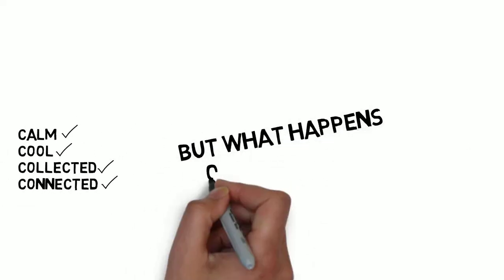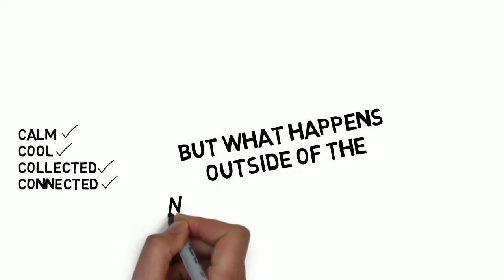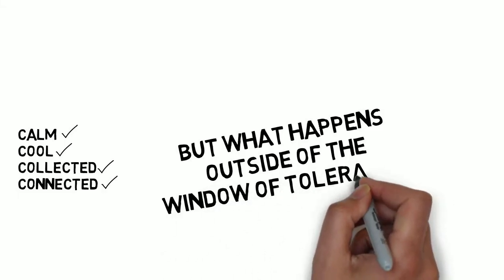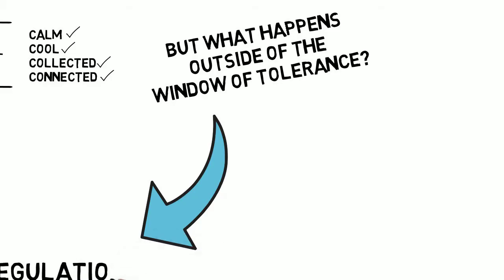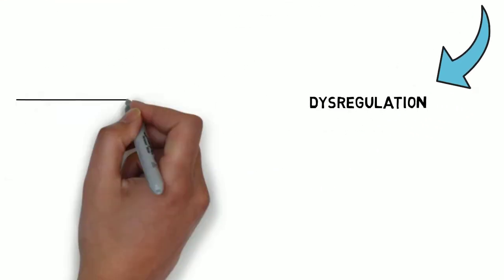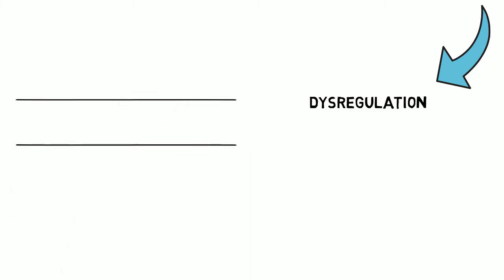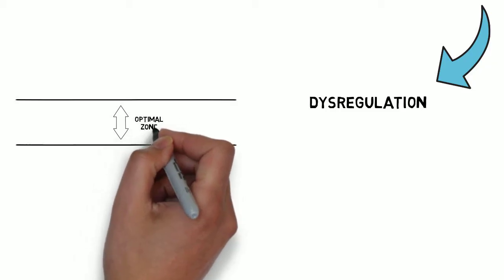But what happens outside of our window of tolerance, outside of our optimal zone? This is something that we call dysregulation. Picture a window of tolerance with our optimal zone being in the middle. We often talk about there being two different kinds of dysregulation.